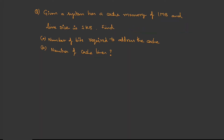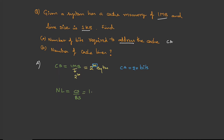Let's try a question: given a system with a cache memory of 1 MB and a line size of 1 KB, find the number of bits required to address the cache and the number of cache lines. Cache size is 1 MB, where M (mega) = 2 to the power 20, so cache size = 2 to the power 20 bytes, and we need 20 bits for the cache address. Number of lines = cache size / block size = 1 MB / 1 KB = 2 to the power 20 / 2 to the power 10 = 2 to the power 10 lines.